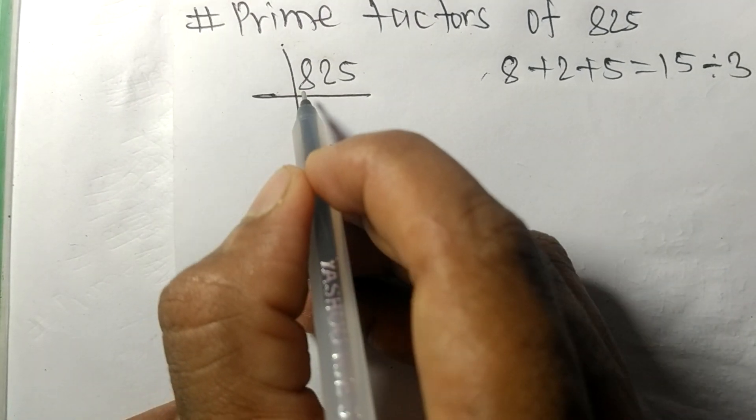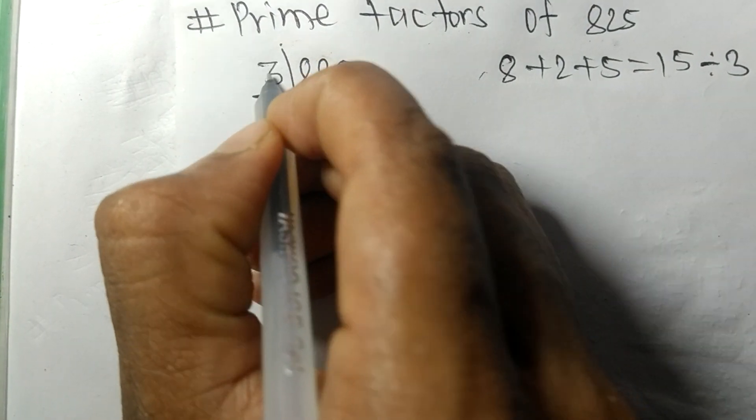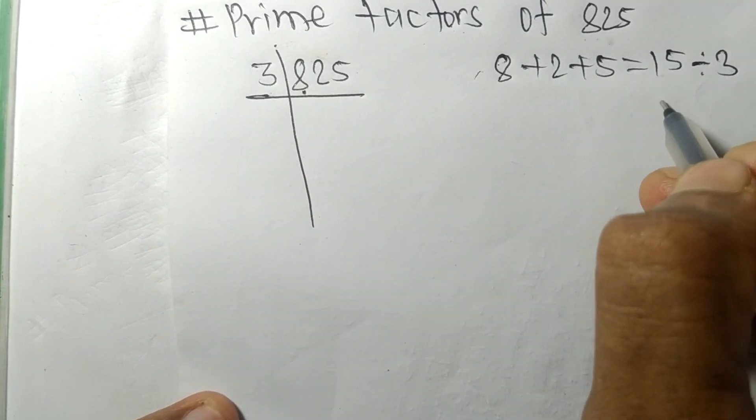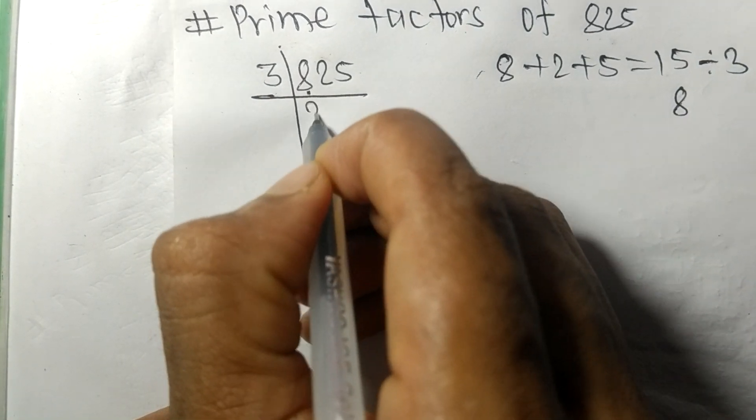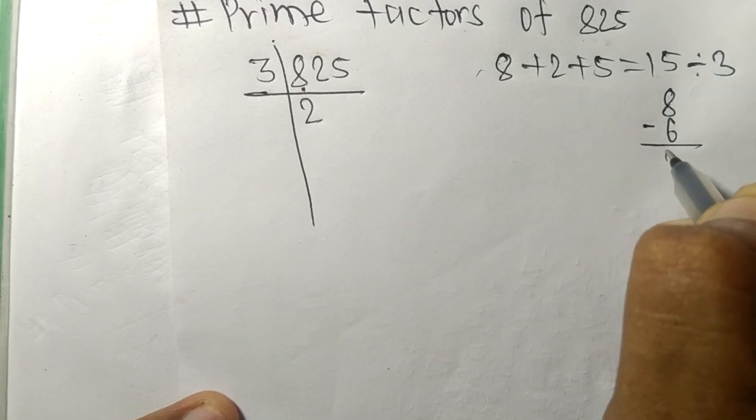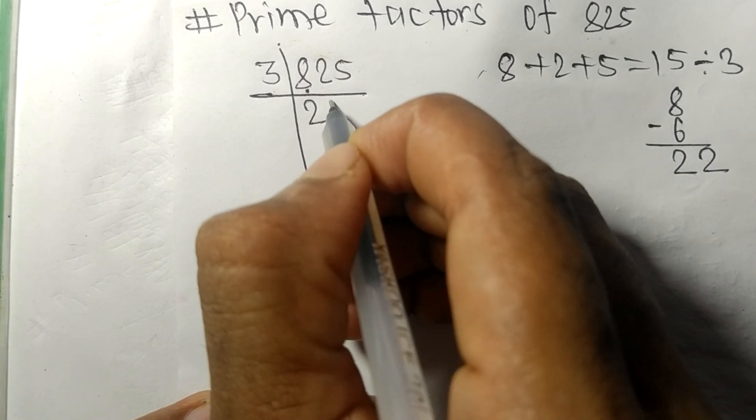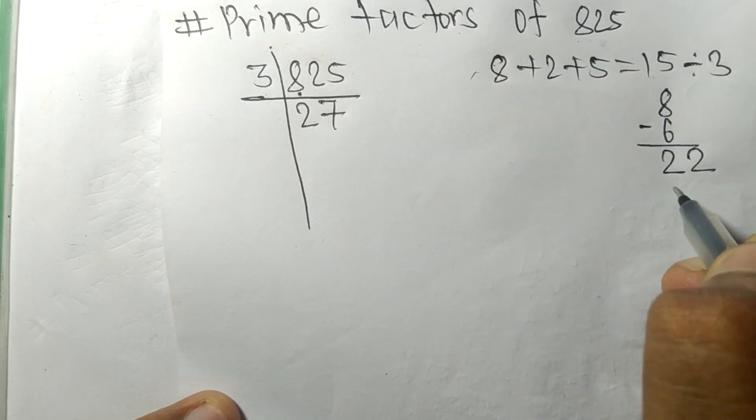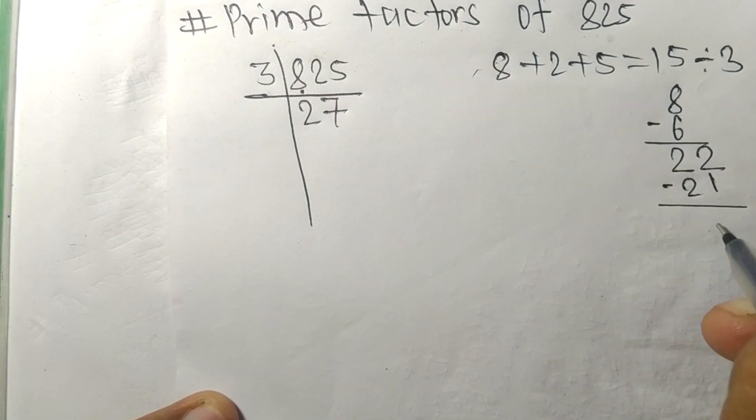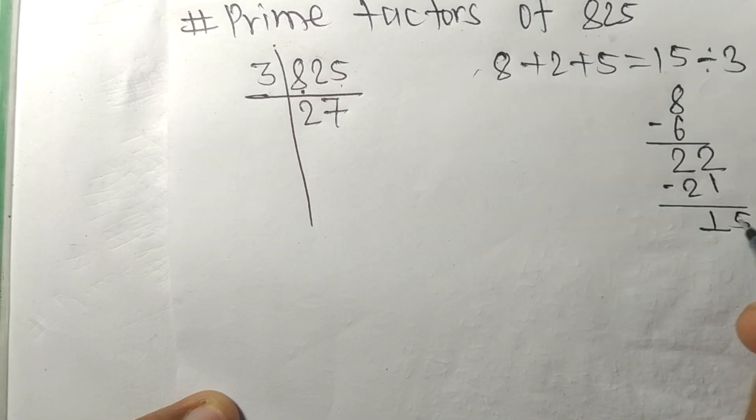So 825 is also divisible by 3. First we have 3 times 2 is 6, on subtracting we get 2, and this 2 makes 22. 3 times 7 is 21, on subtracting we get 1, and this 5 makes 15. 3 times 5 is 15.